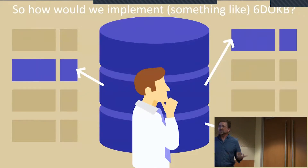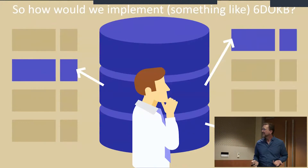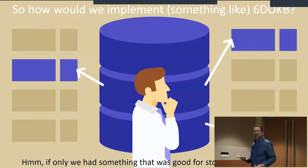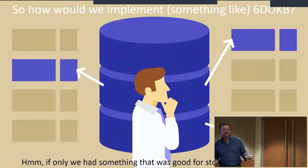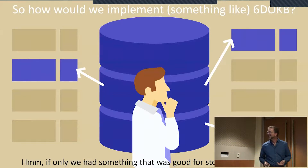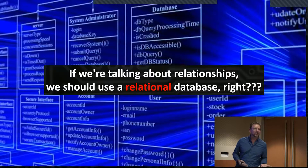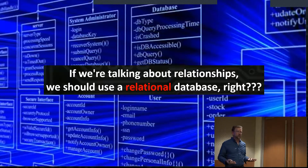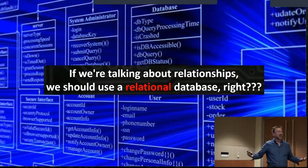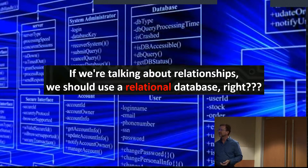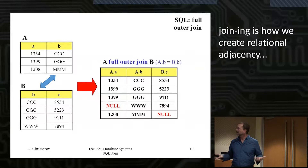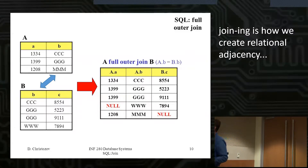So, how would we implement something like Six Degrees of Kevin Bacon? If only we had something really good for storing relationships. Generally you'd think of a relational database — I mean, it's right there on the label. But it turns out this doesn't necessarily work for a problem like this. Let's explore a database join, creating adjacencies in the database. We have an A table, a B table, joining on the B column to create a derived table.